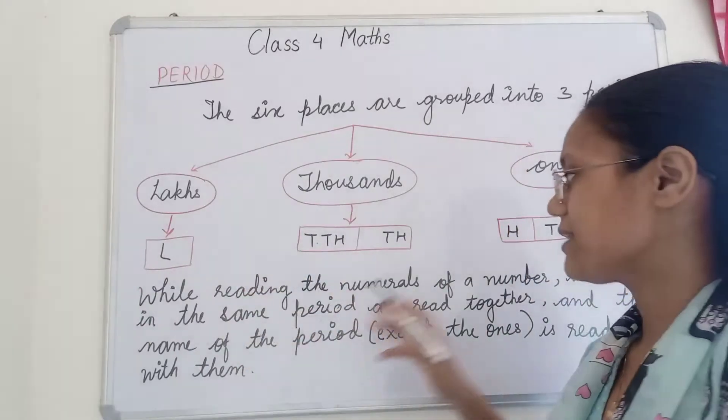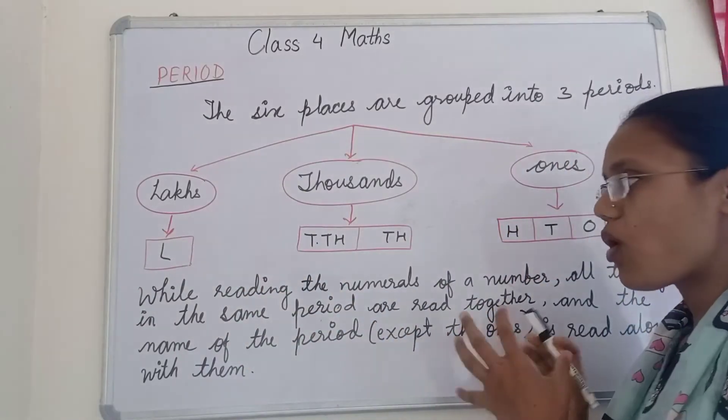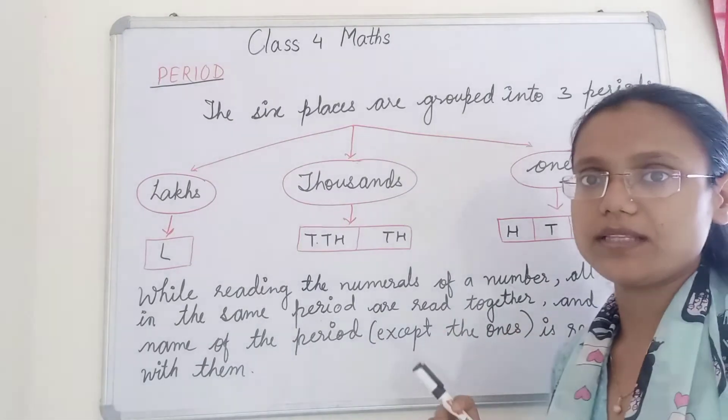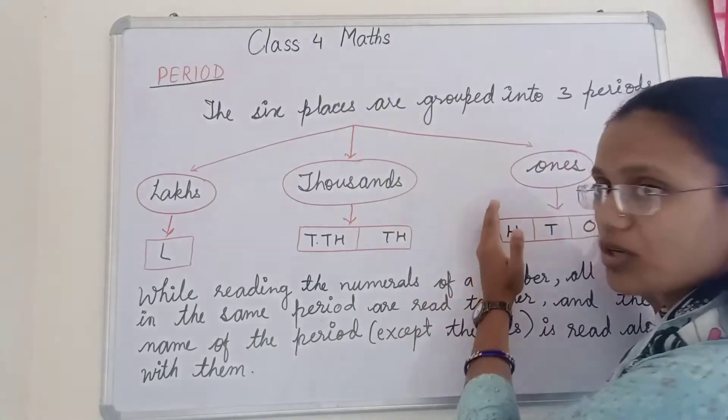Now see, while reading the numeral of a number, all the digits in the same periods are read together. We read the number of one period.